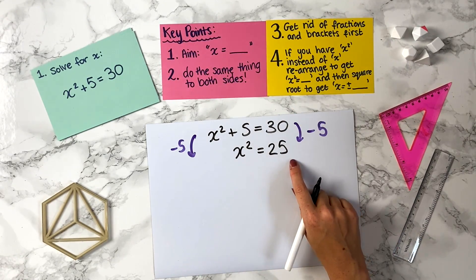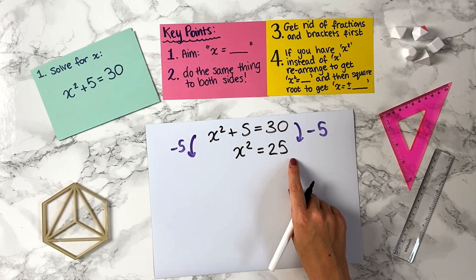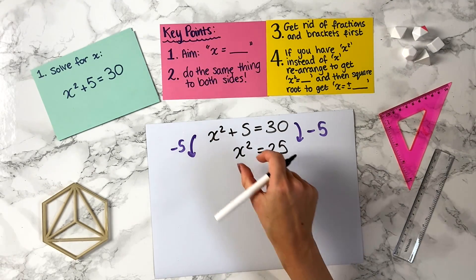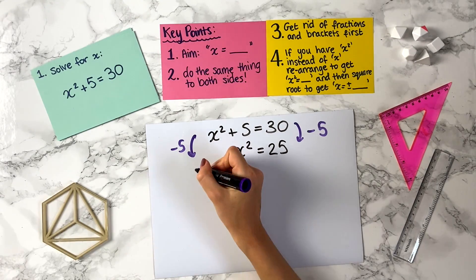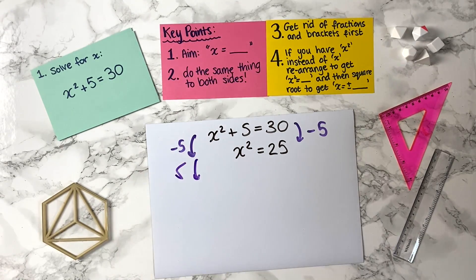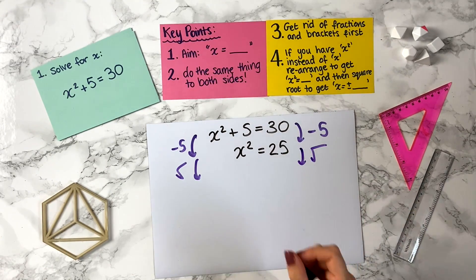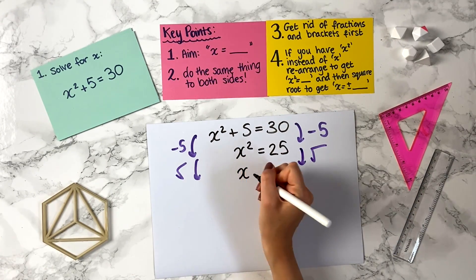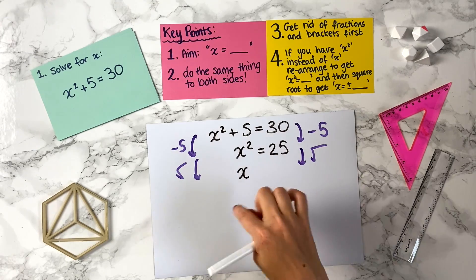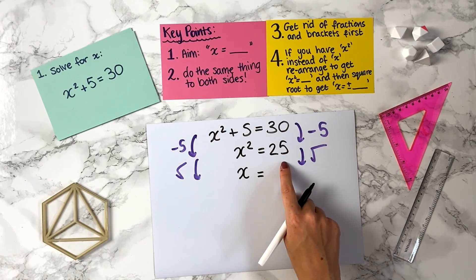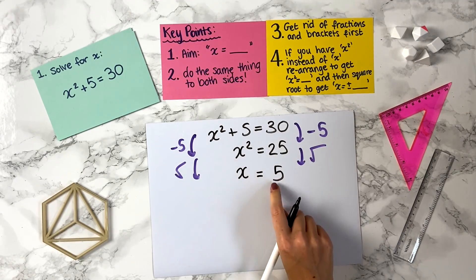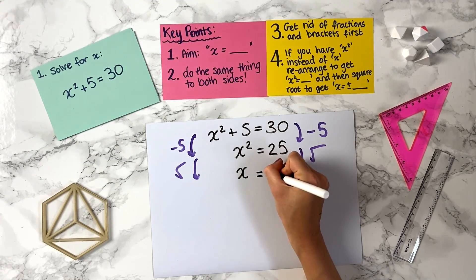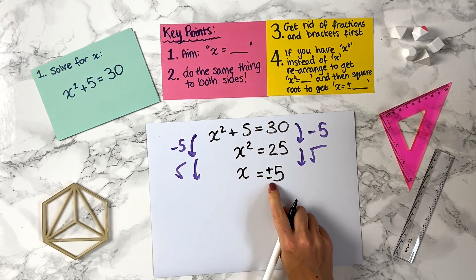So now we have x squared equals 25. Following key point 4, in order to just get x equals, to undo the squared we're going to take the square root of both sides. On the left hand side, square rooting the squared gives us x, and on the right hand side the square root of 25 is 5. But you have to be really careful here — whenever you square root when solving an equation like this, you need to put plus or minus before the number.